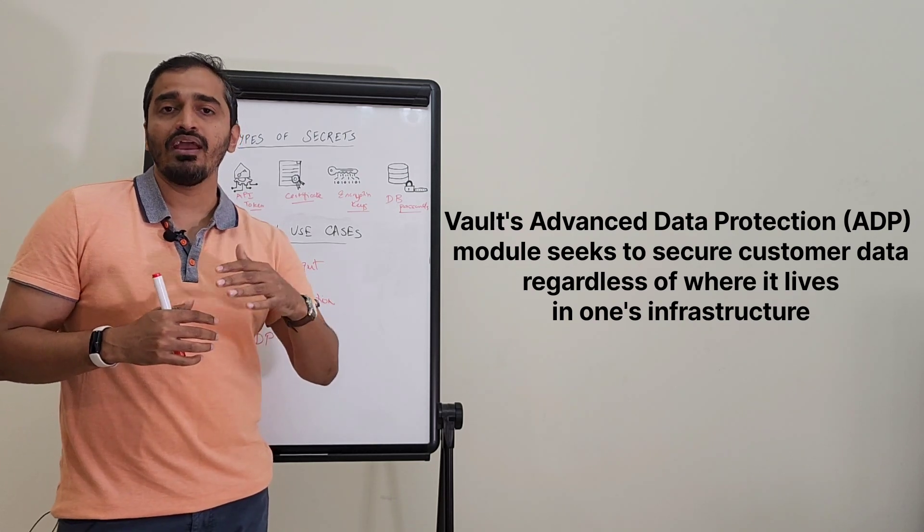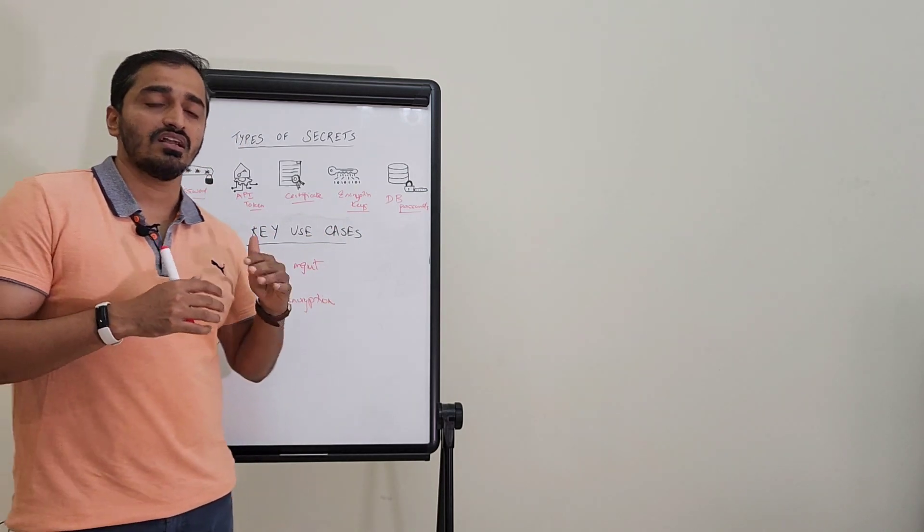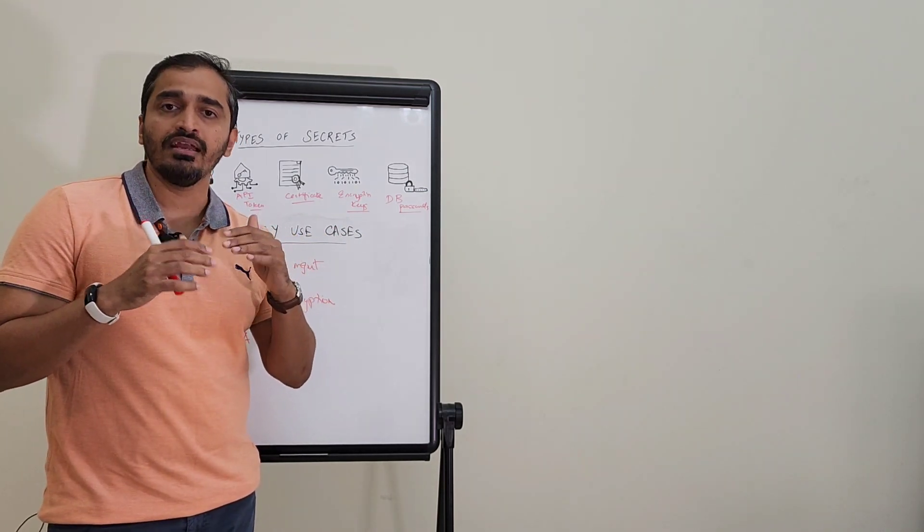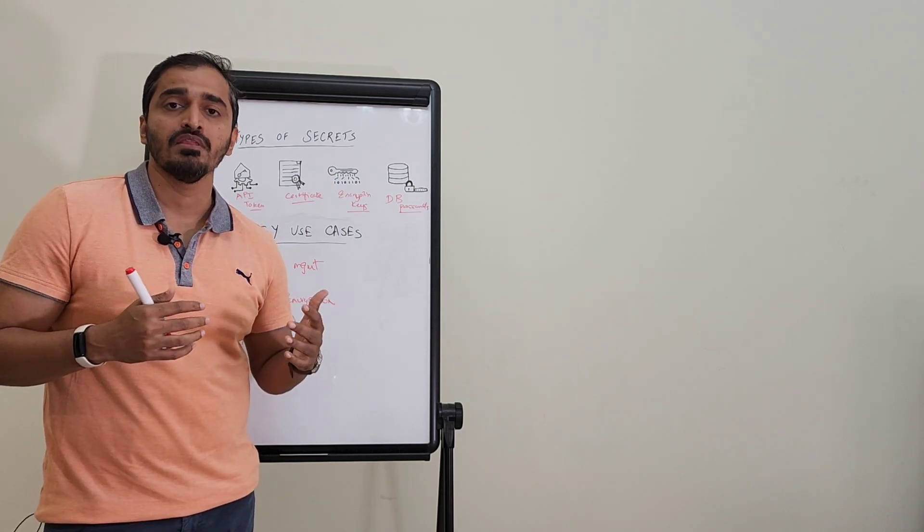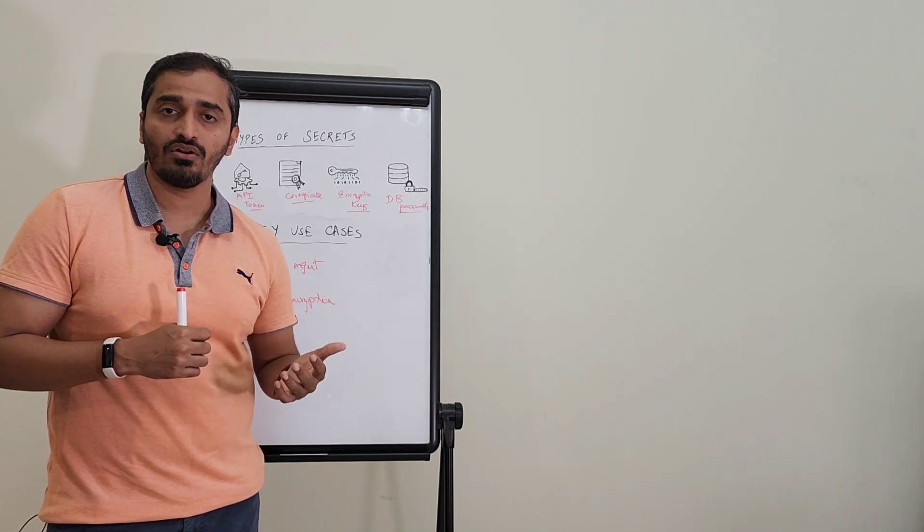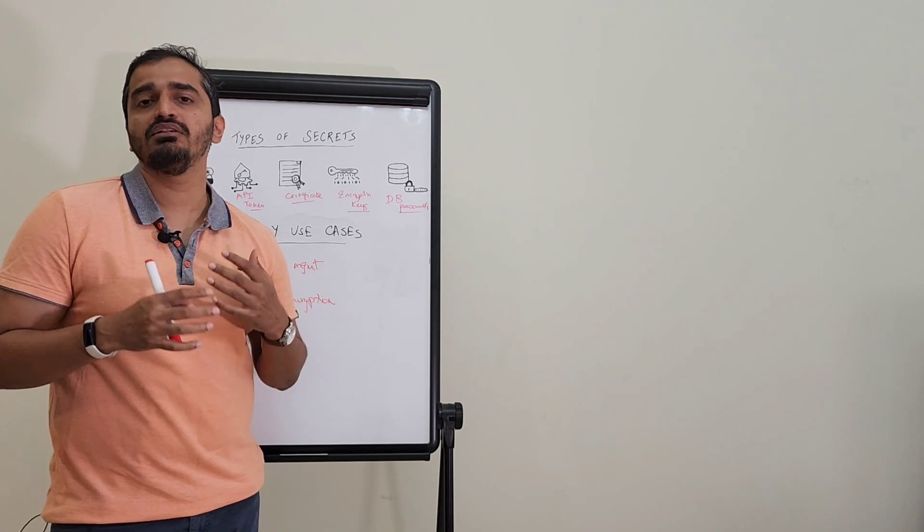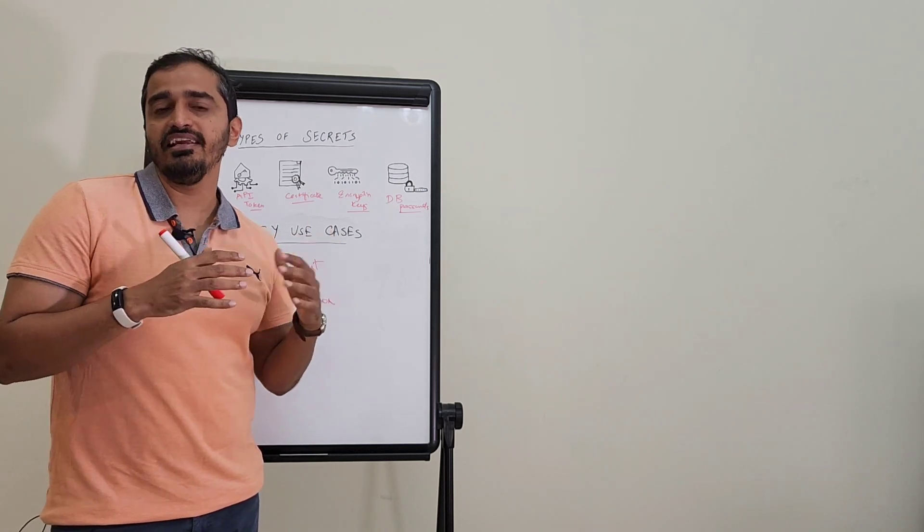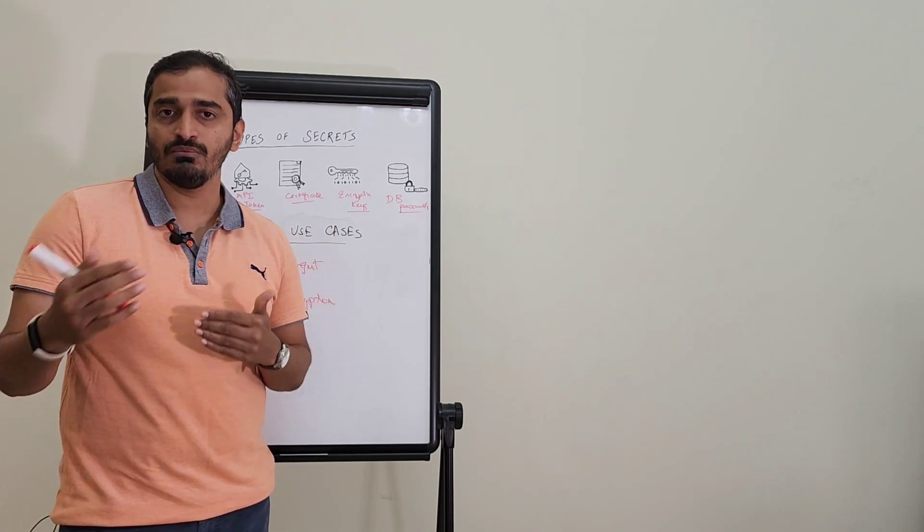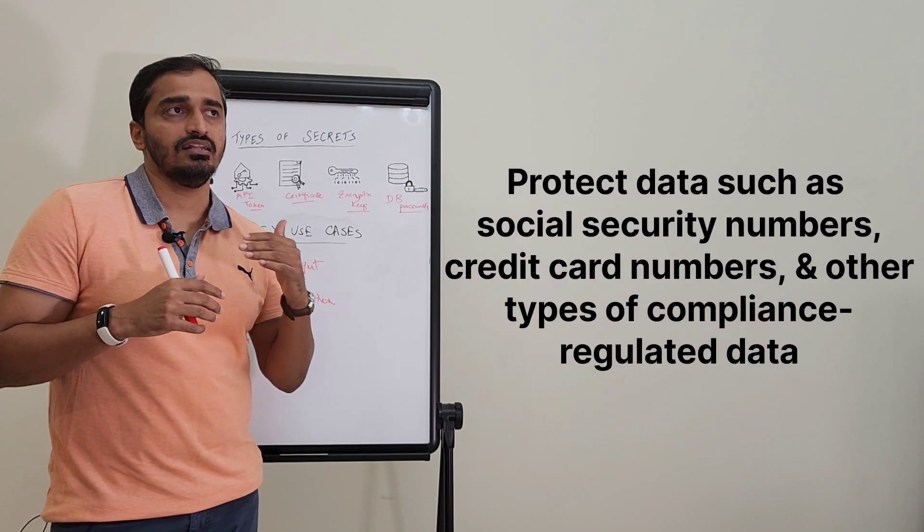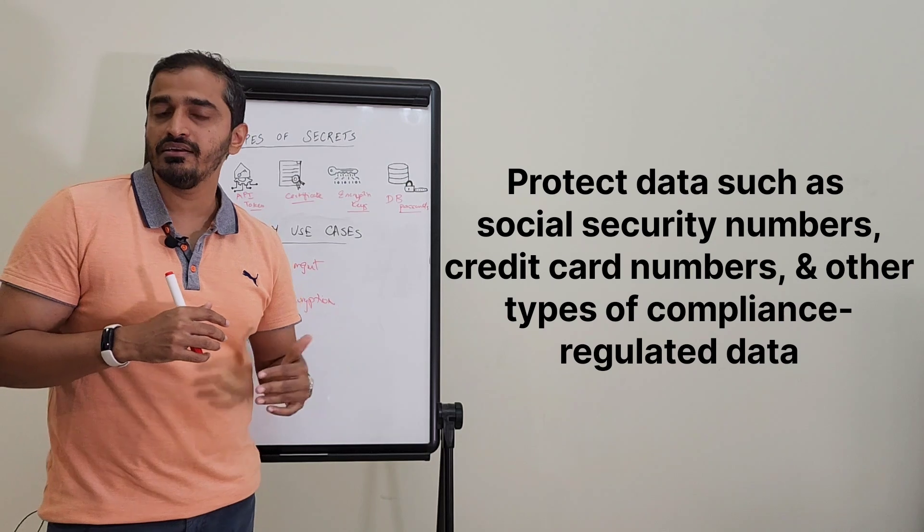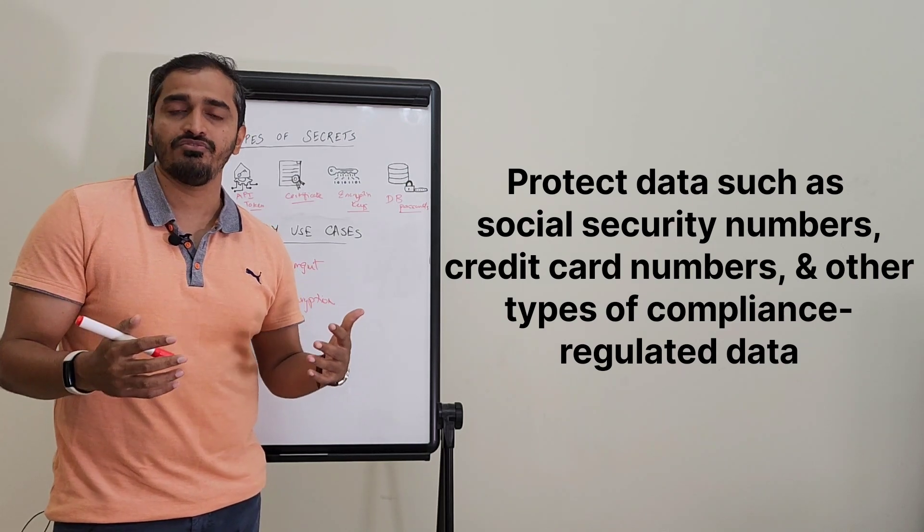How can some of the Advanced Data Protection features come into play for industries such as banking, financial companies, and even healthcare organizations where they have to deal with sensitive data and there is a need to essentially mask some of that data? One of the examples I can give is, let's say you're working with a credit card organization as one of your customers.